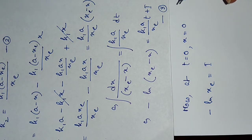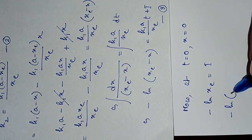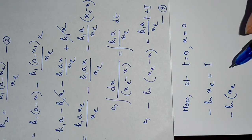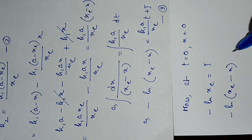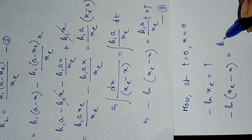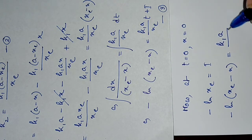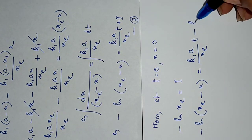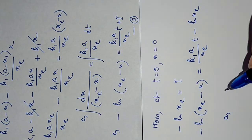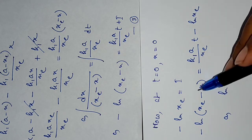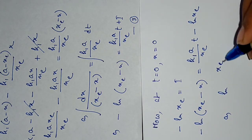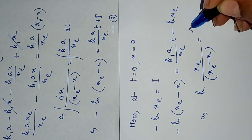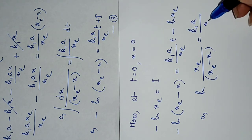Substituting the integration constant into the equation: -ln(x_e - x) = (k1·a/x_e)·t - ln(x_e). Rearranging: ln(x_e) - ln(x_e - x) = (k1·a/x_e)·t, which gives ln[x_e / (x_e - x)] = (k1·a/x_e)·t.